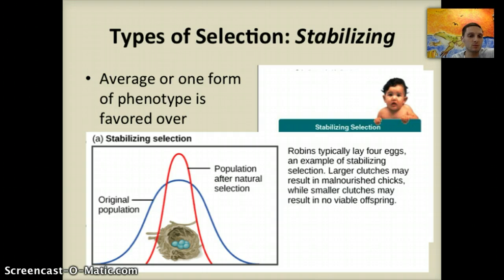That's our discussion of gene pools and speciation. We'll finish up this unit by looking at cladograms and cladistics.